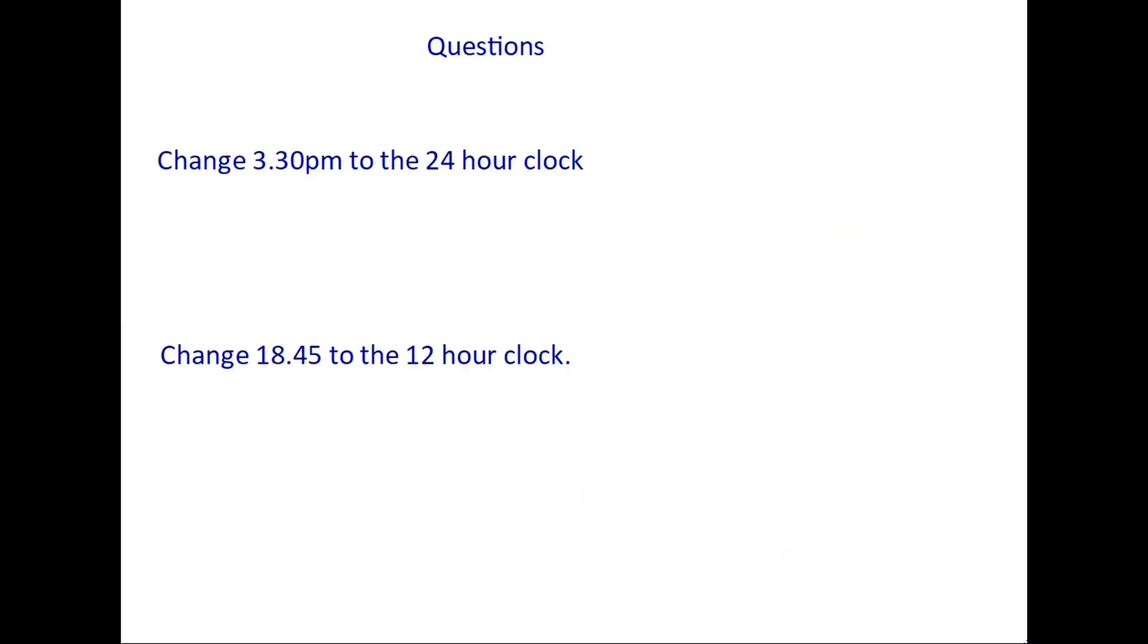So again, let's have a look at a couple of typical questions. The first one is asking us to change 3:30 PM to the 24 hour clock. So if it is 3:30 PM, let's use our rule. We have to add 12 hours. So 3 plus 12 is 15. The minutes stay the same. But don't forget, because we are now in the 24 hour clock, we do not need an AM or a PM. The time is simply 15:30.